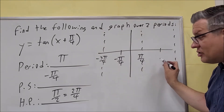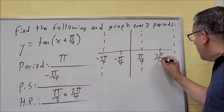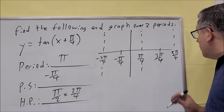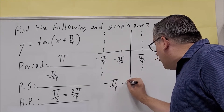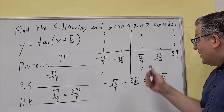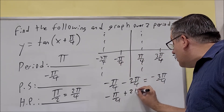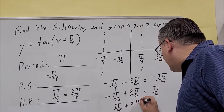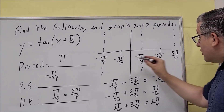To find the remaining points, I take pi over 4 and add the half point, giving me 3 pi over 4. Adding another 2 pi over 4 gives me 5 pi over 4. So to summarize algebraically: I did negative pi over 4 minus 2 pi over 4 to get negative 3 pi over 4; then negative pi over 4 plus 2 pi over 4 to get pi over 4; then pi over 4 plus 2 pi over 4 to get 3 pi over 4, and so forth.